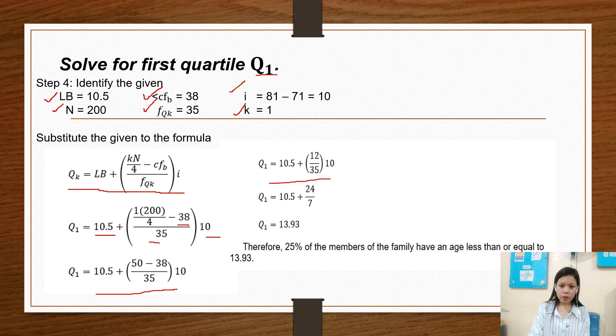So Q sub 1 equals 10.5 plus 50 minus 38 over 35 times 10. So we have here Q sub 1 equals 10.5 plus 12 over 35 times 10. Q sub 1 equals 10.5 plus 24 over 7. So our Q sub 1 equals 13.93.